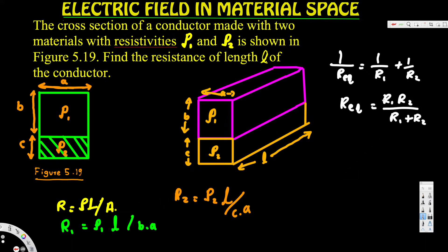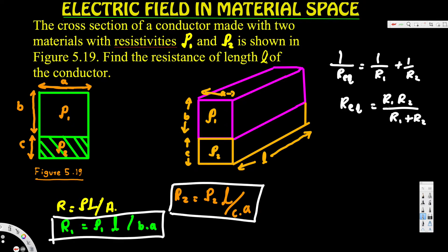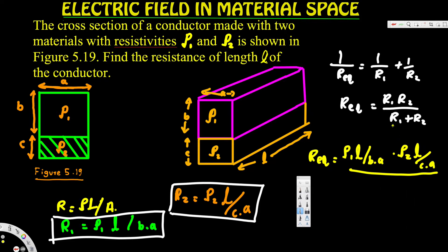We know R1 and R2 in terms of rho * l / A. Plugging in: R_eq equals (rho1 * l / (b*a)) times (rho2 * l / (c*a)) divided by (rho1 * l / (b*a)) plus (rho2 * l / (c*a)).